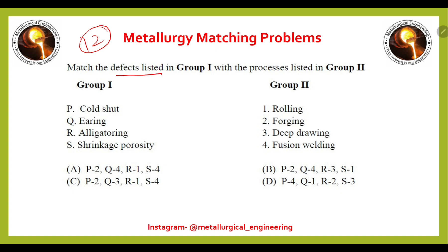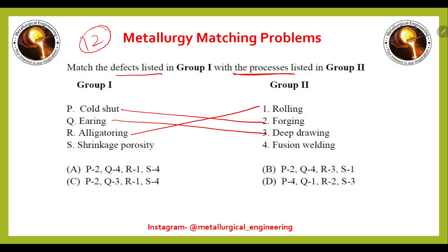In the 12th matching problem, we match defects associated with processes: cold shut for forging, earring for deep drawing, alligatoring for rolling, and shrinkage porosity for fusion welding. The right answer is option C.